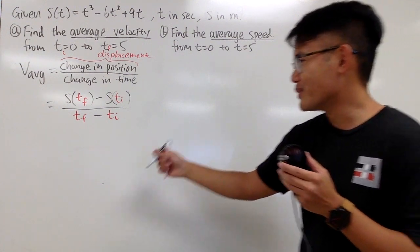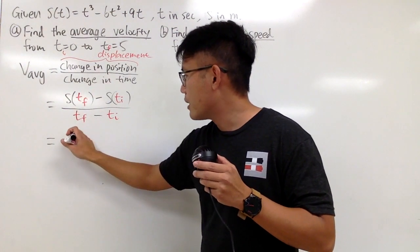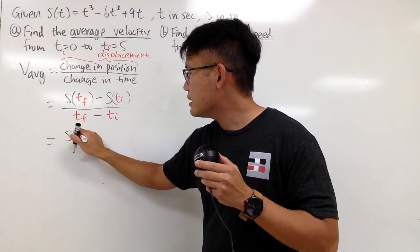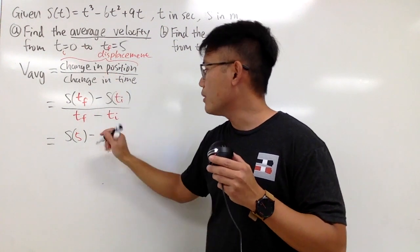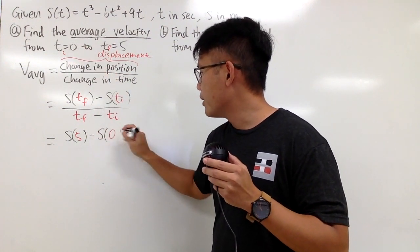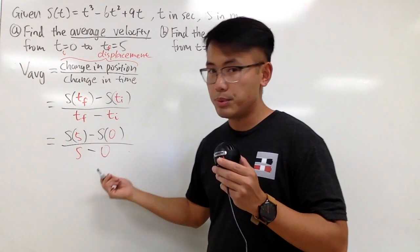And of course, we can finish this up real quick. tf is 5, so on the top here, we are calculating s of 5 minus s of 0, over 5 minus 0. That's it.